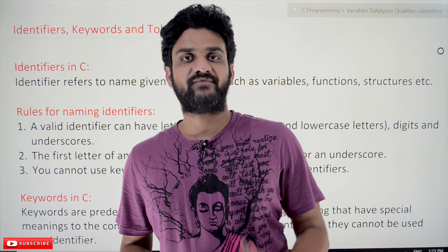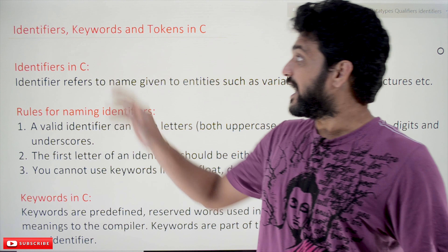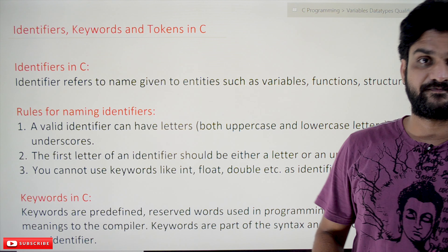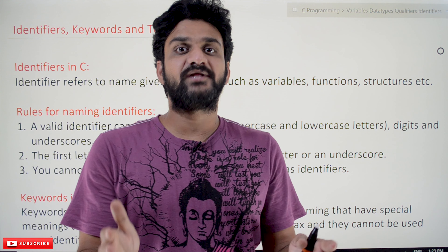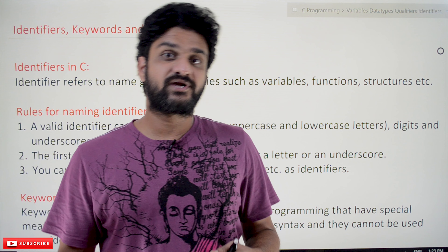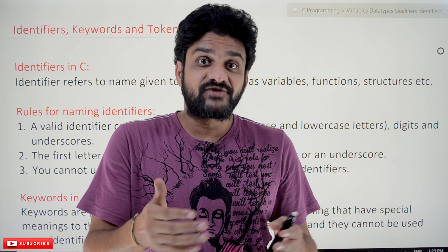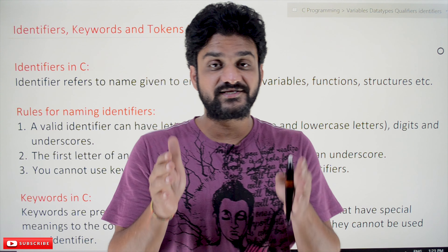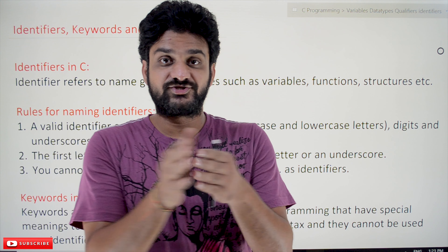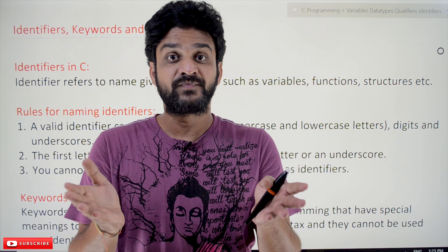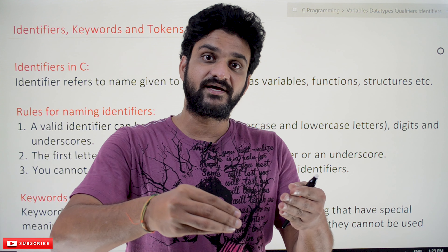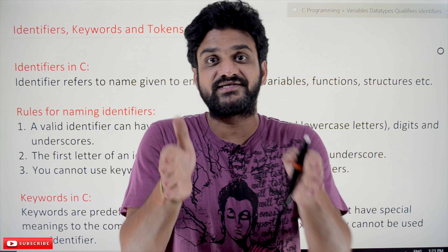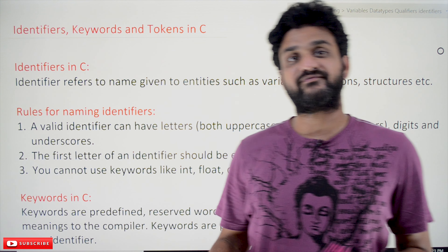Hi, welcome to Learning Monkey. I am Vikram. In this class we'll try to understand identifiers, keywords, and tokens in C. Before understanding that, we'll try to understand what is meant by character set. Any language is constructed from a set of characters. If you take English, it is constructed from a set of 26 characters — any word, any sentence in English is constructed from those 26 characters. That is what we call a character set.